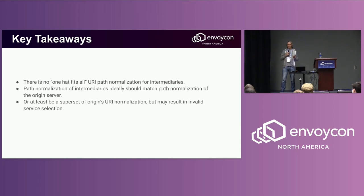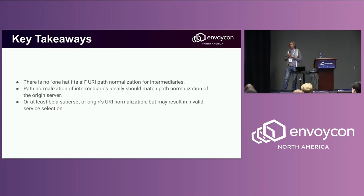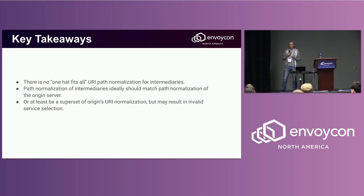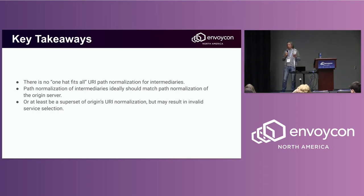If Envoy performs a superset of path normalization compared to the origin server, then at least you know your security policies will be safe. But service selection may end up being wrong, which is normally a much lesser evil.